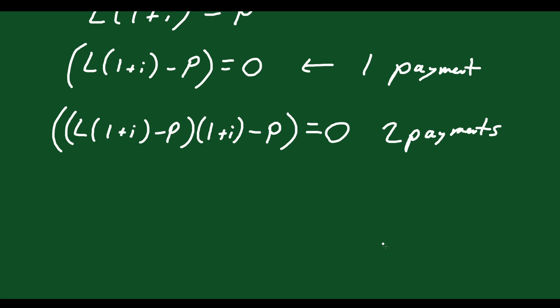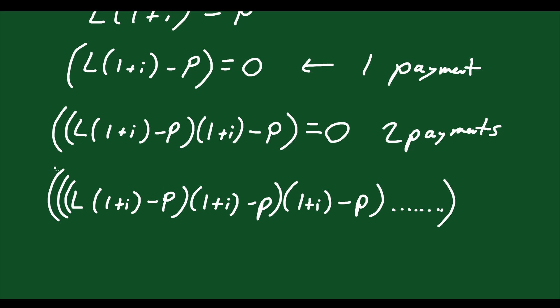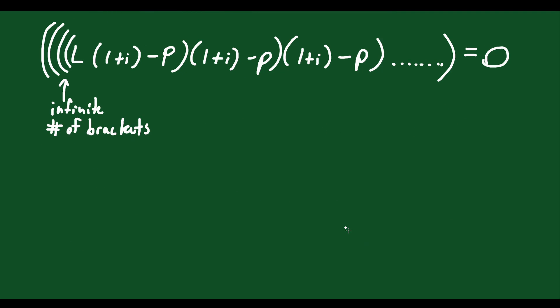Obviously when you take out a loan you're not paying it back with one or two payments — it goes on for quite a long time. The general form would be L times (1 plus i) minus P, times (1 plus i) minus P, times (1 plus i) minus P, and so on — an infinite number of brackets — all equal to zero. The question is: how could you find P given the loan amount, monthly interest rate, and number of months?